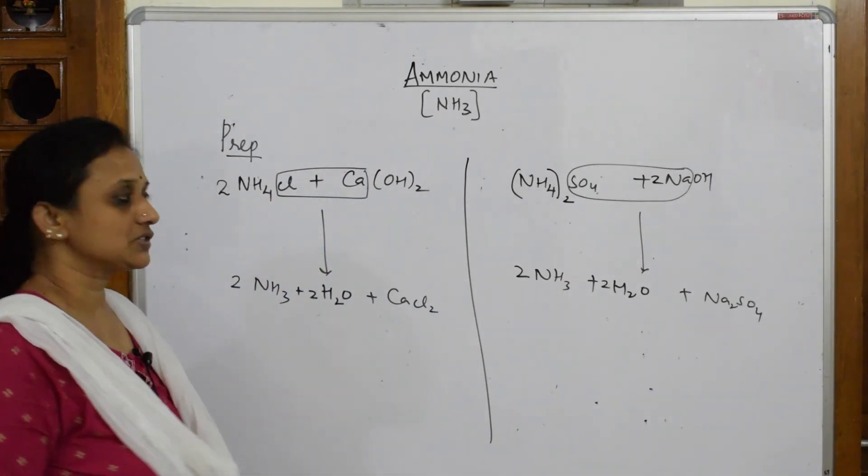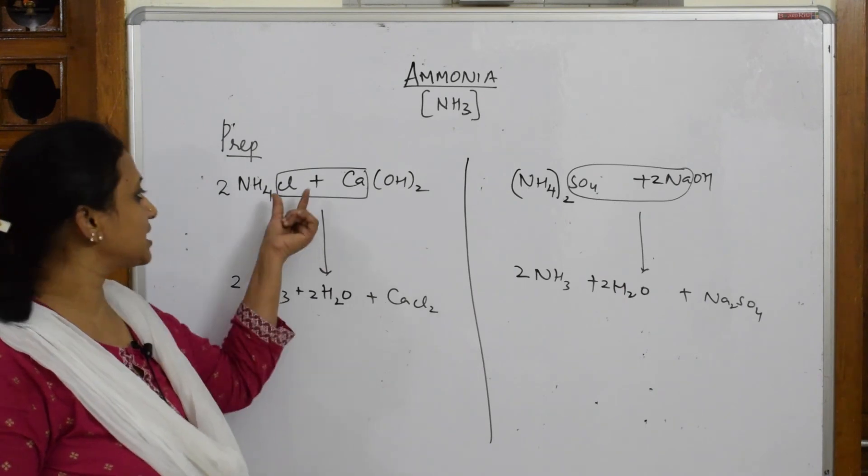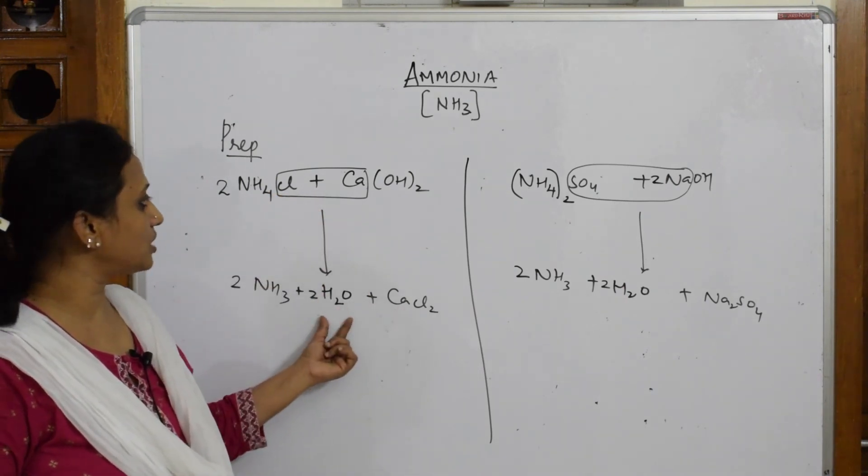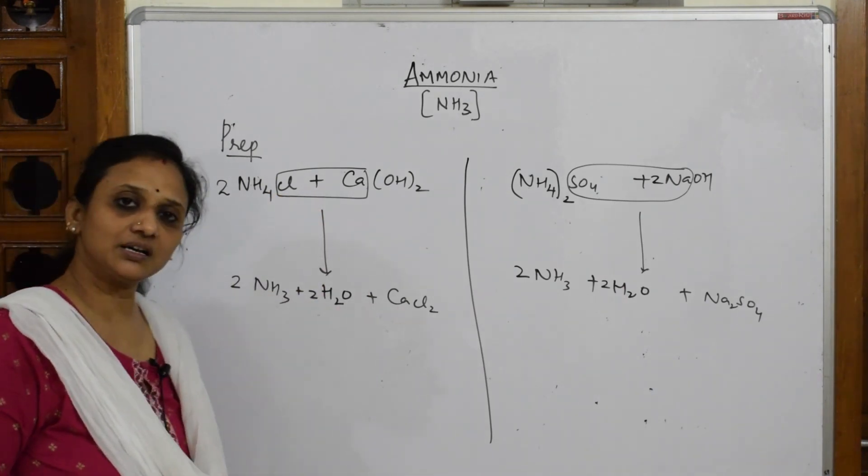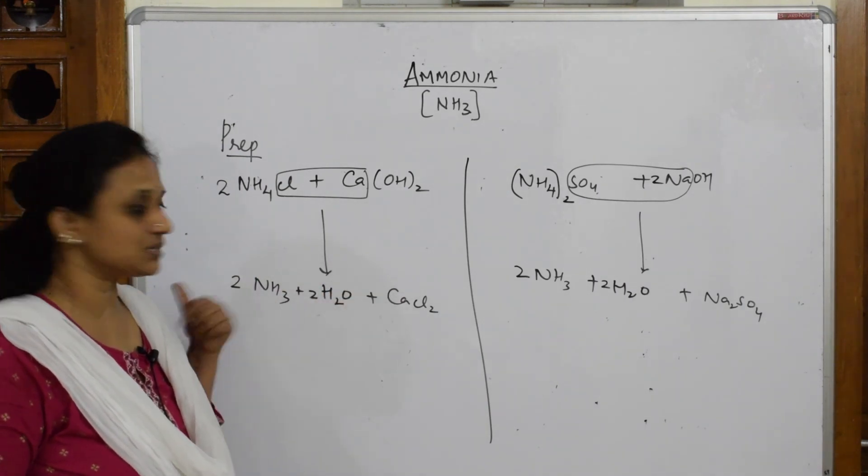So this is your balanced reaction. This is how you are going to prepare ammonia from the salts. Just prepare the salt, take out water, and write that ammonia because hydrogen from here and OH from here has released. The leftover is ammonia.